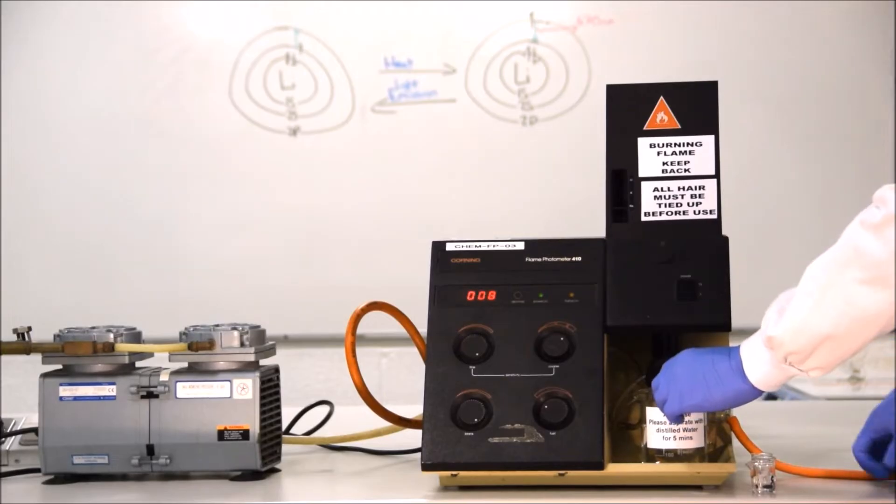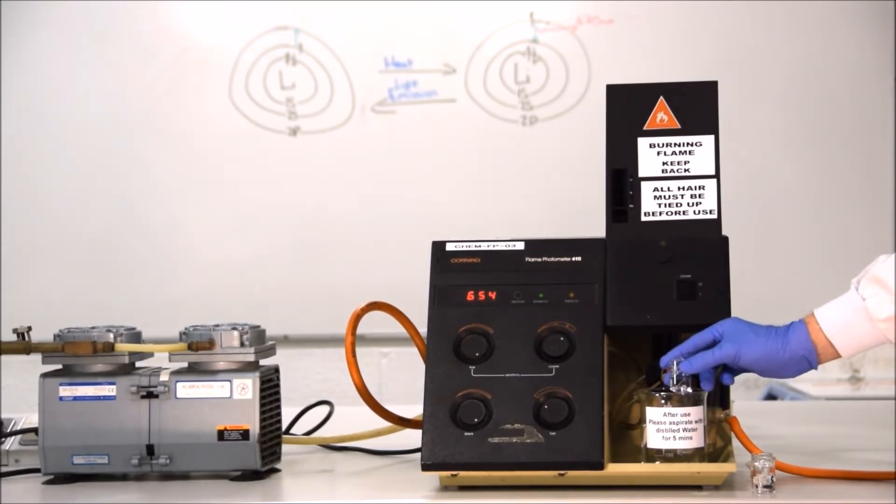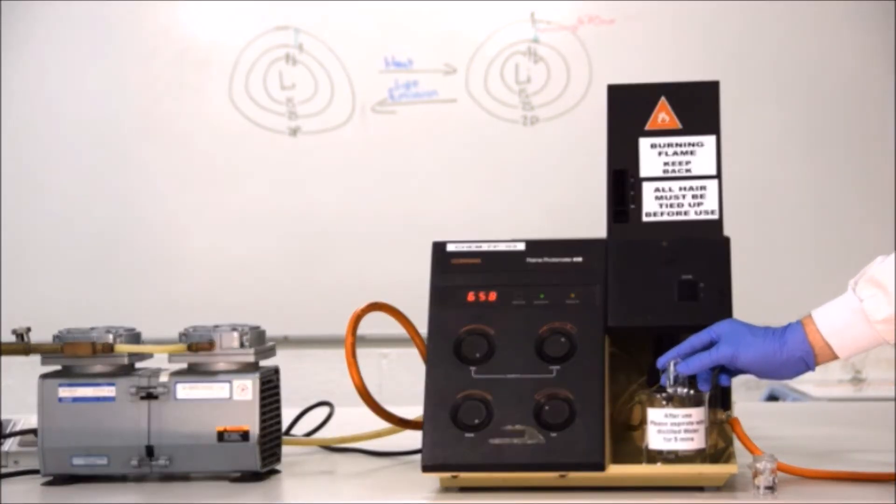If this is not the case, then we can adjust the sensitivity using both the coarse adjustment and the fine adjustment wheel. You will then have to re-zero the machine once you've picked a suitable sensitivity. You will have to change the sensitivity settings between each different metal that you measure.